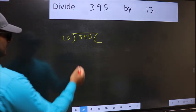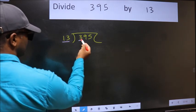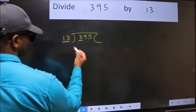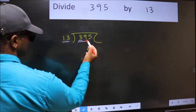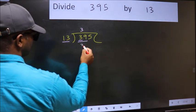Next, here we have 3 and here 13. 3 is smaller than 13, so we should take 2 numbers: 39. When do we get 39 in the 13 table? 13 times 3 is 39.